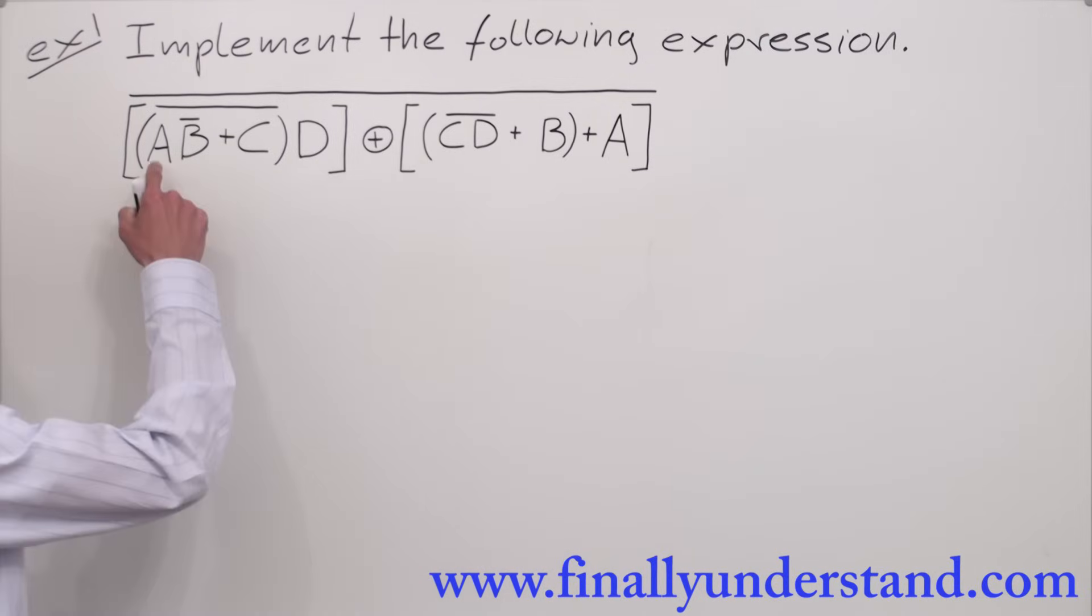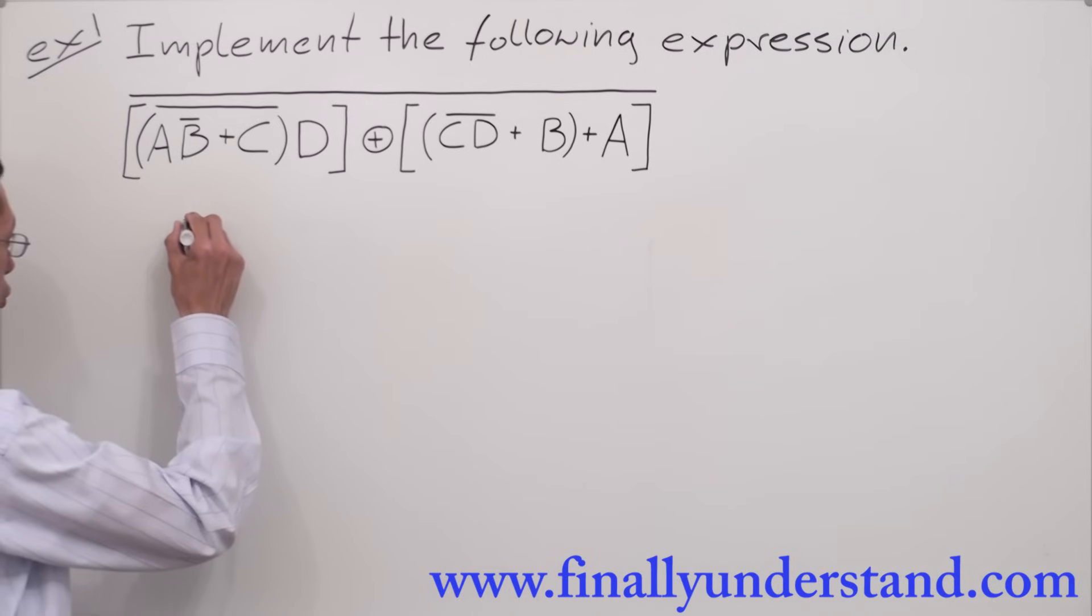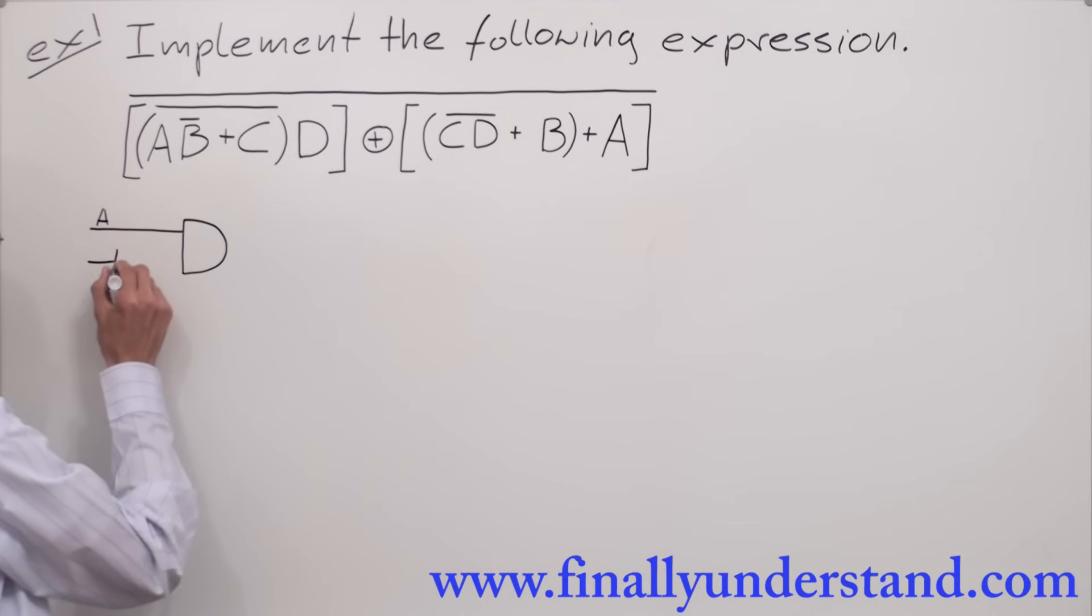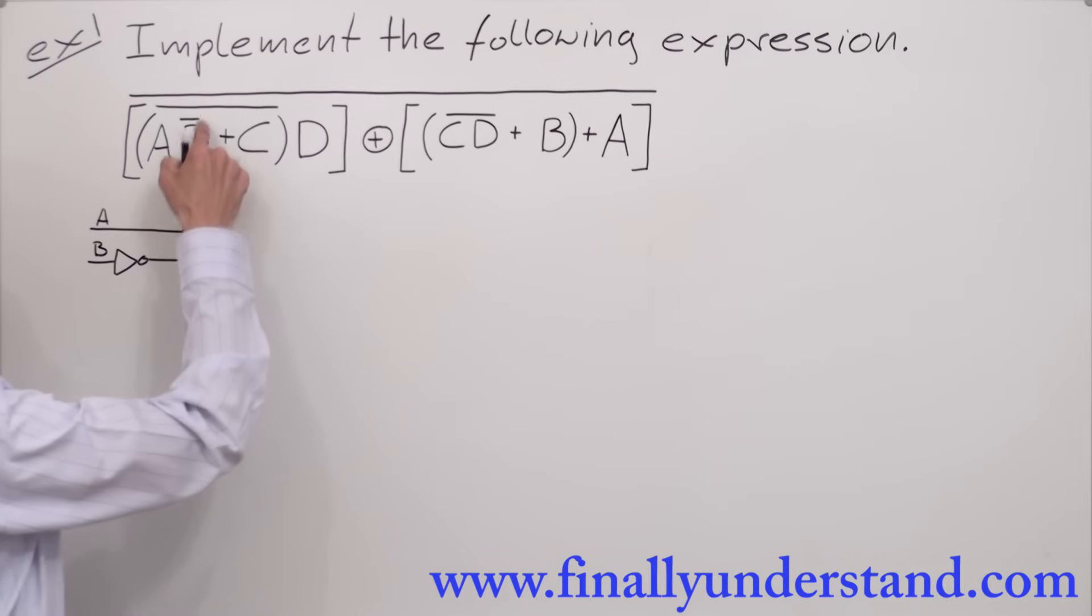We have multiplication A times B. Multiplication is nothing else but logic AND, so I'm going to draw an AND gate. This AND gate will have two inputs: input A, and we're going to have B, but B will go with the inverter. Why? Because we have a bar over B.